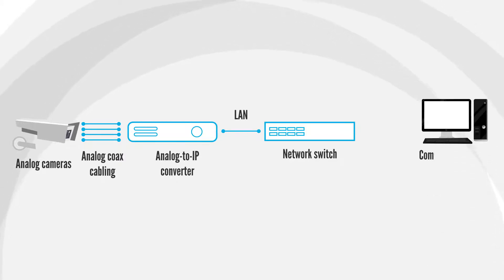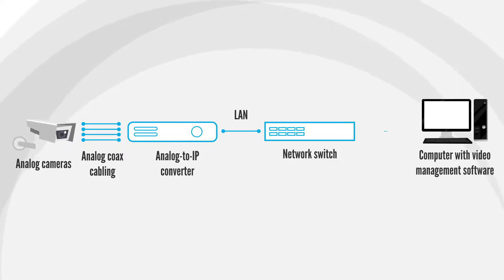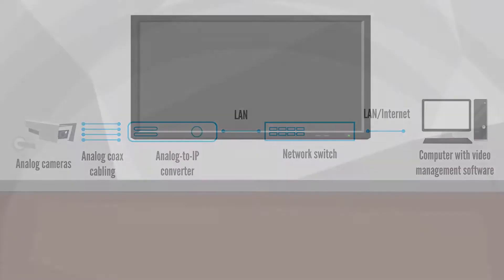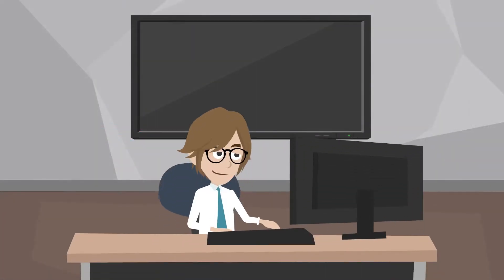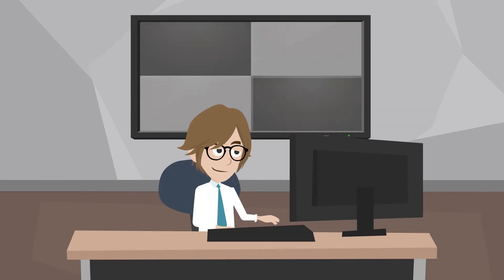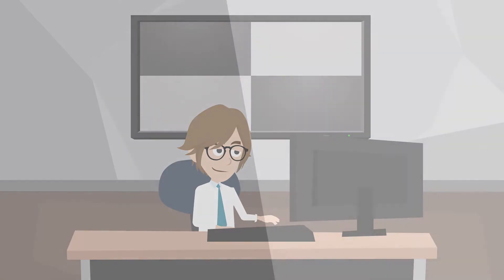Step 3: Connecting the computer to the network switch with an Ethernet cable. Step 4: Do the same steps like you're adding an IP camera — search your camera IP on the video management software and configure it. Then the video images of the analog cameras will show up on your monitor screen.